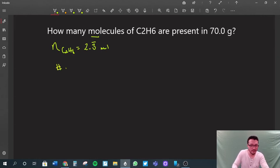We need the number of molecules. This is what we need. What we're given, or what we've determined now using moles, is 2.3 continuing moles of C2H6. We're going to multiply that by a conversion factor.